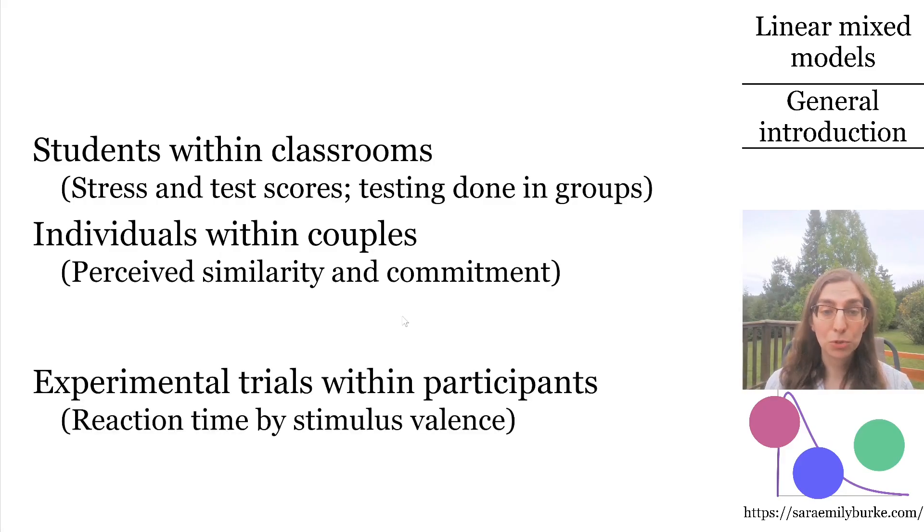Now suppose you have a cognitive experiment, where you're testing valence bias in a lexical decision task. That is, participants make a quick word-non-word decision, and you're interested in the word trials, where the words are positively or negatively valenced. Each participant goes through 100 of these trials, 50 positive and 50 negative. If you have 65 participants, then you really have 6,500 observations, because each participant provides 100.